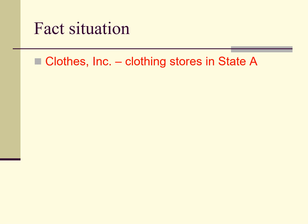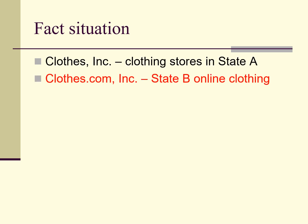Clothes Inc. is a clothing retailer that owns and operates clothing stores in State A. Clothes.com Inc. is an online clothing retailer operated from premises in State B, and does not itself have any physical presence in State A.